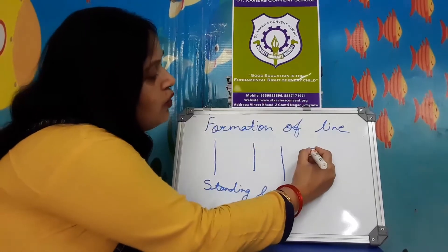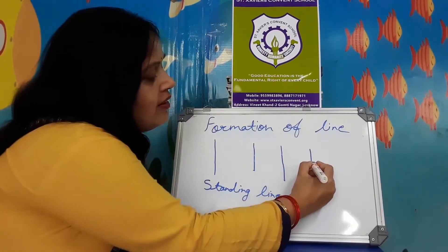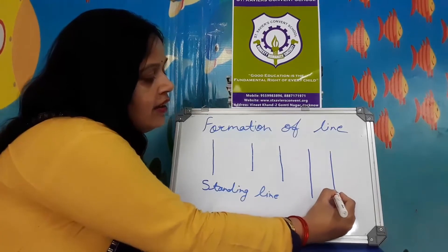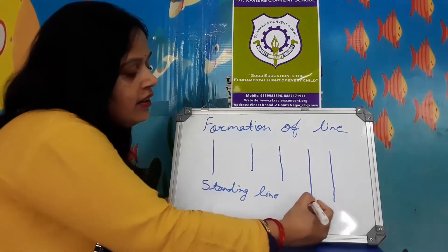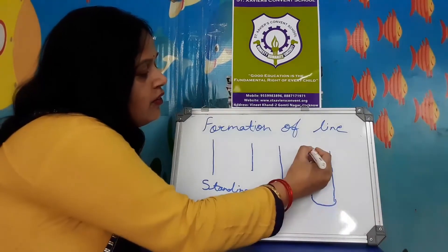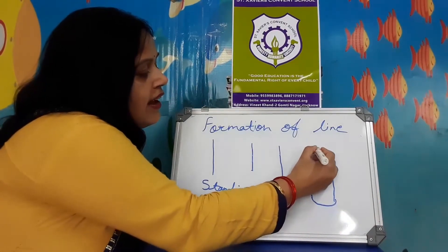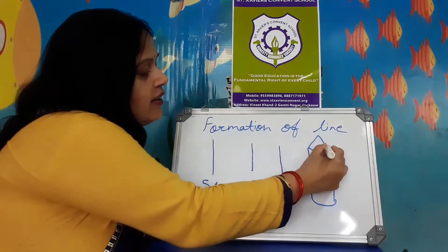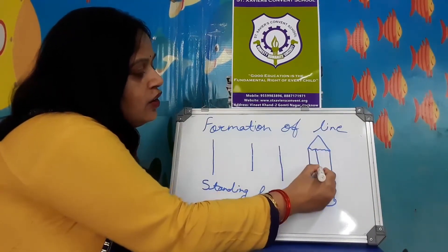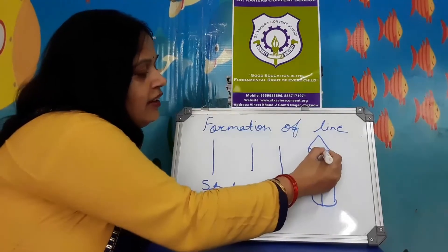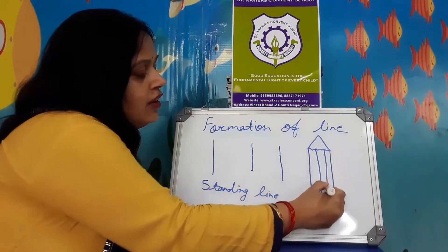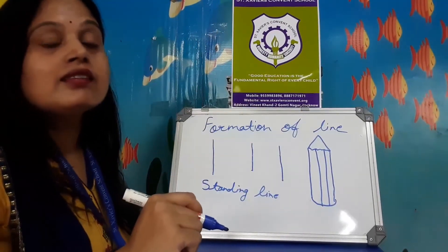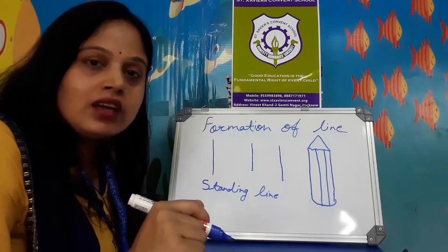So, how to draw a pencil? Standing line, another standing line, curve, zigzag — like a hand — and two standing lines. We have to draw this. This is a pencil — like a stand, a standing line.